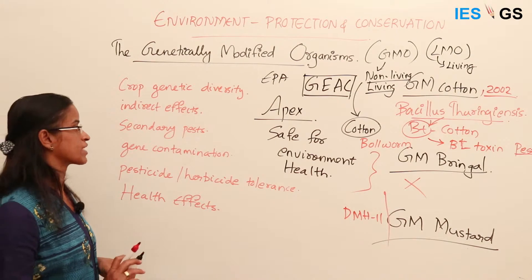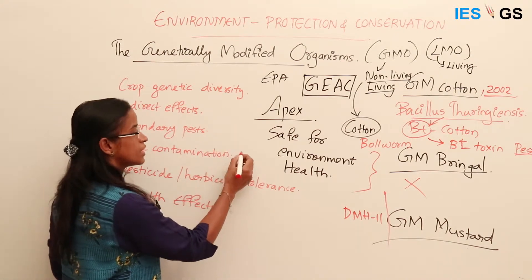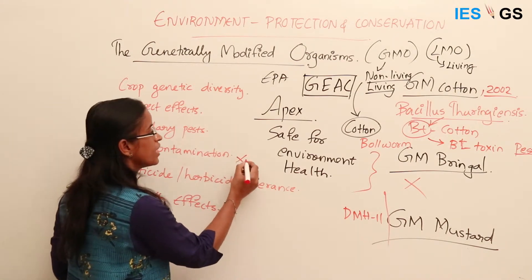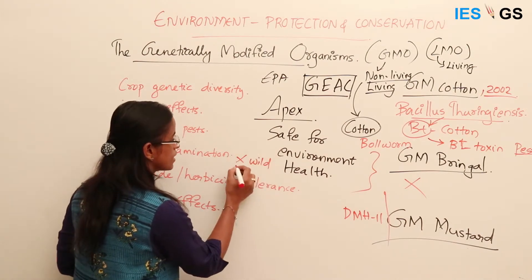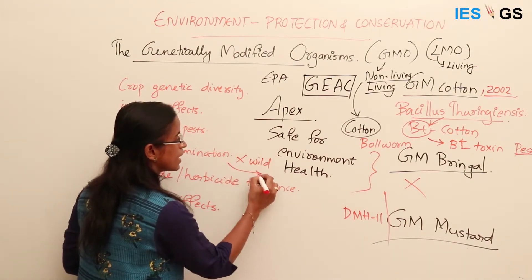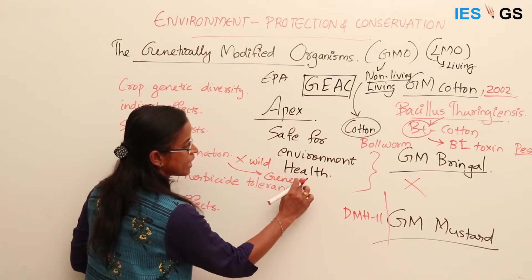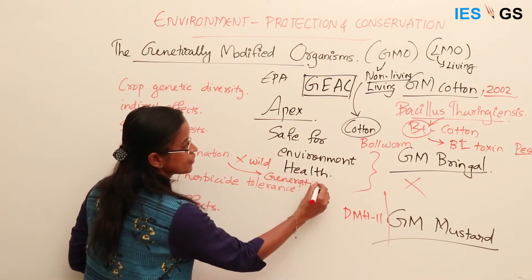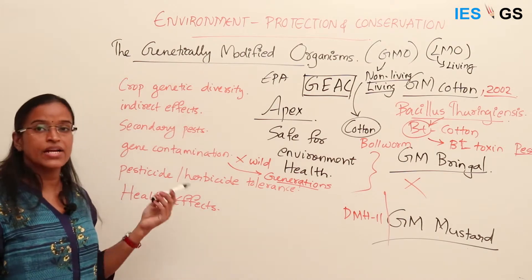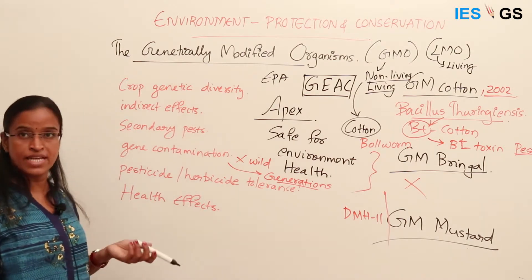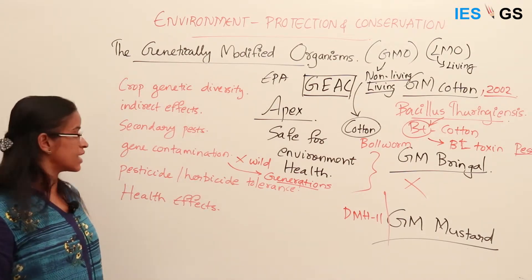There are also chances of gene contamination. For example, if GM cotton is released and its genes cross with a wild variety of cotton, the modified gene will enter future generations of those plants. We don't know what effect the modified gene will have across generations, and this is a significant concern.